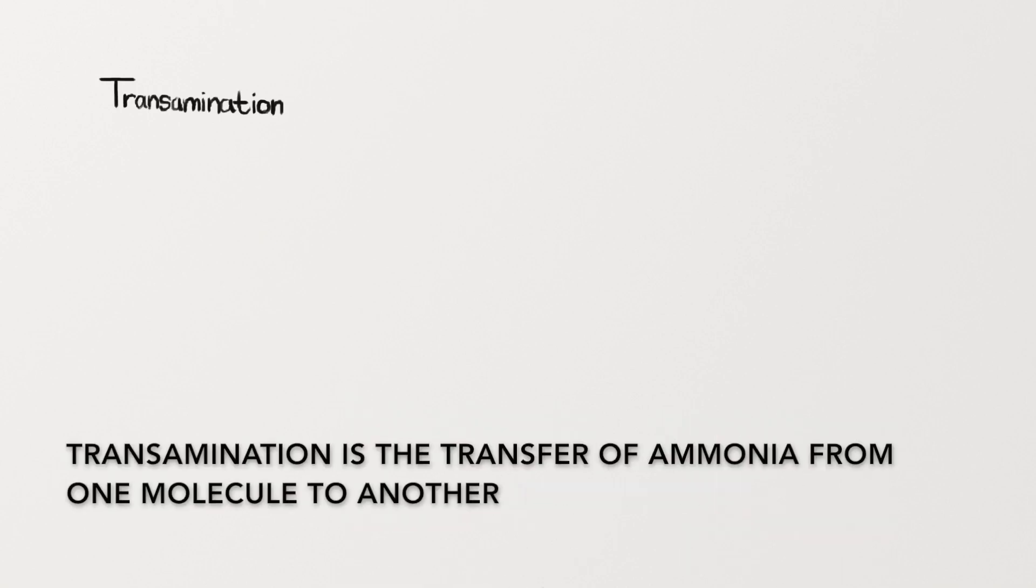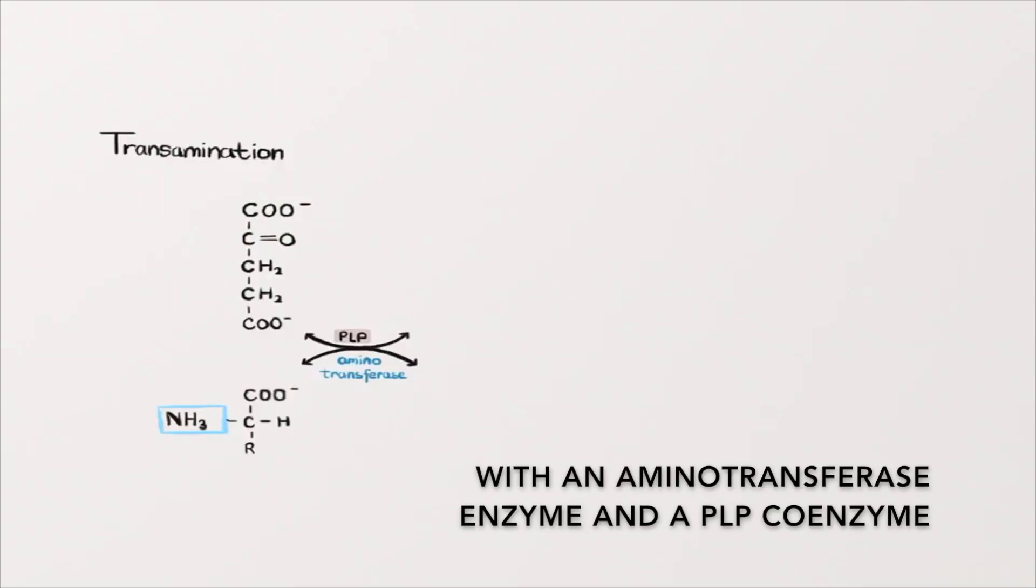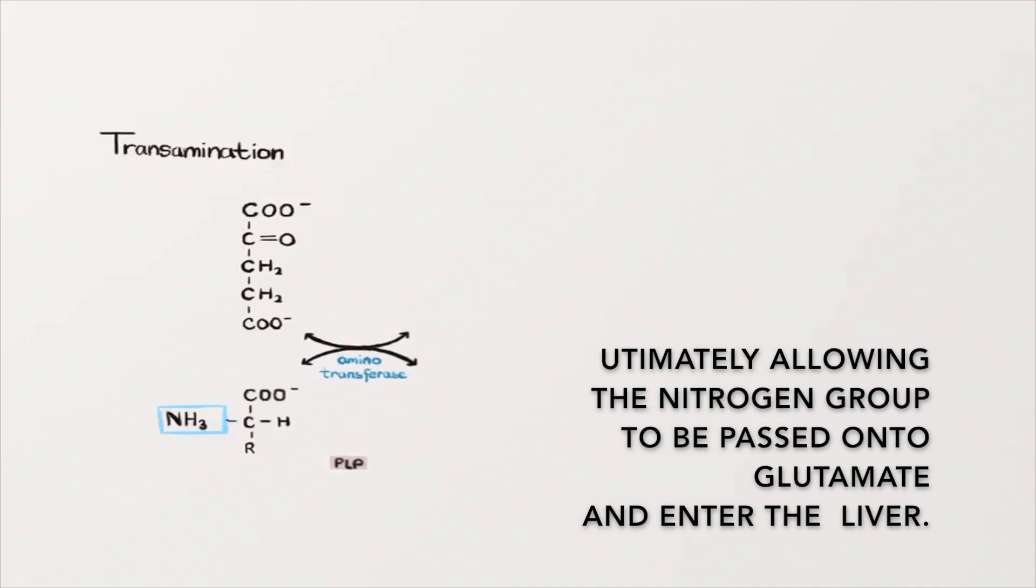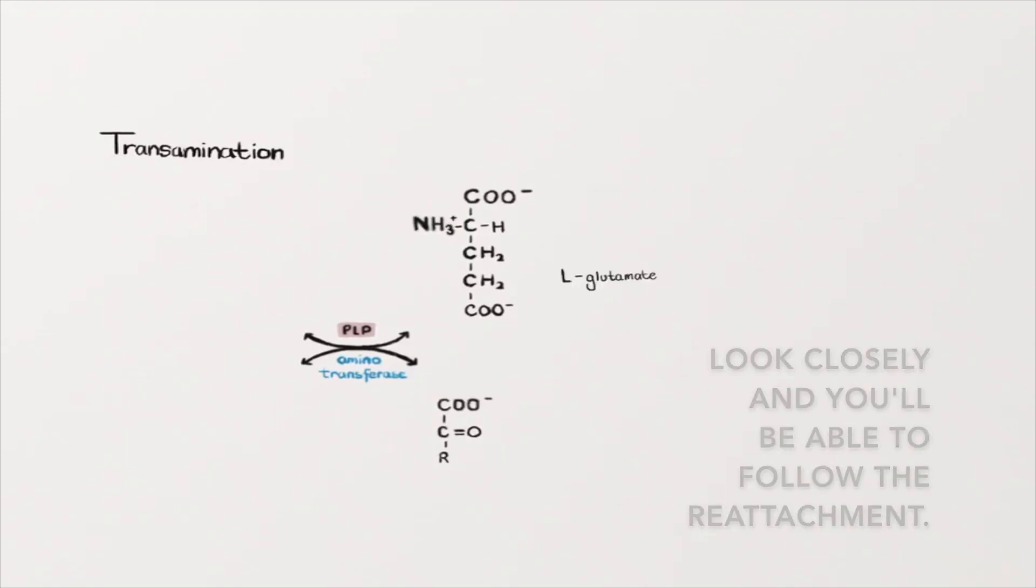Transamination is the transfer of ammonia from one molecule to another with an aminotransferase enzyme and a PLP coenzyme, ultimately allowing the nitrogen group to be passed on to glutamate and enter the liver. You will notice that the molecules you have learned from the past take part in this process and can reattach themselves in different ways to form new molecules. Look closely and you'll be able to follow the reattachment.